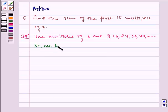So we have the AP as 8, 16, 24, 32, 40 and so on.